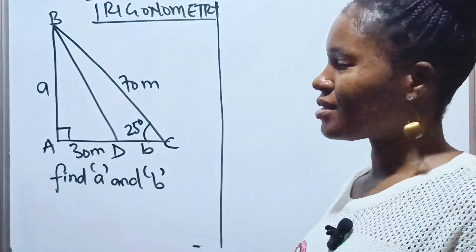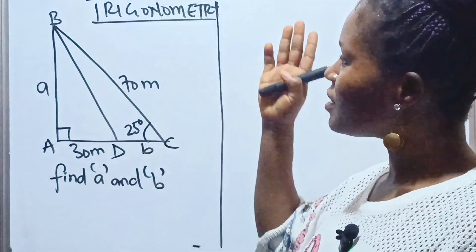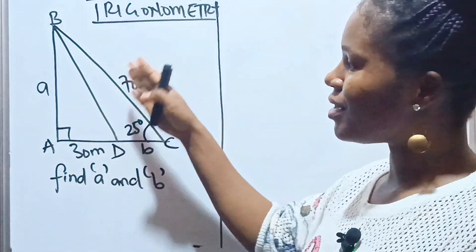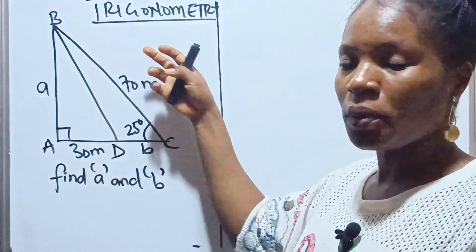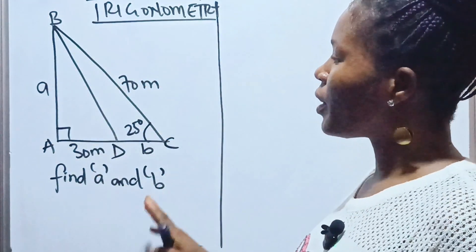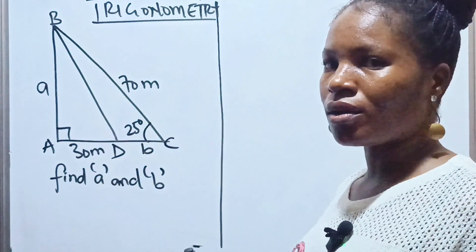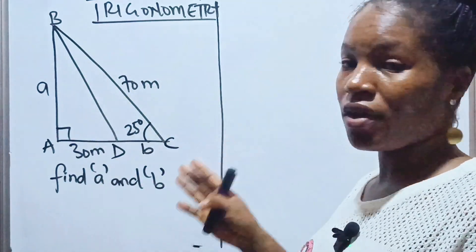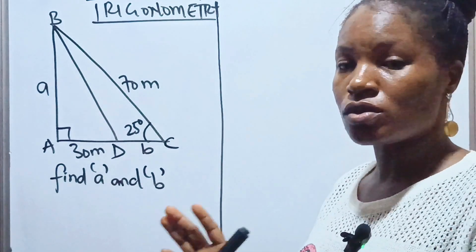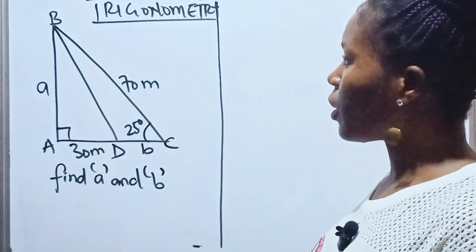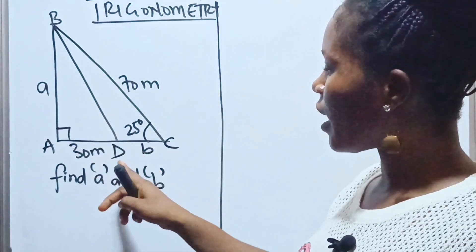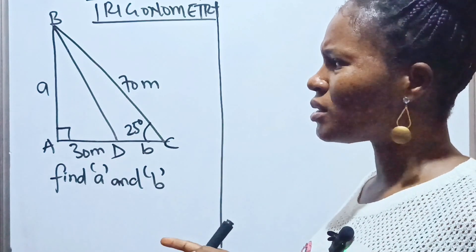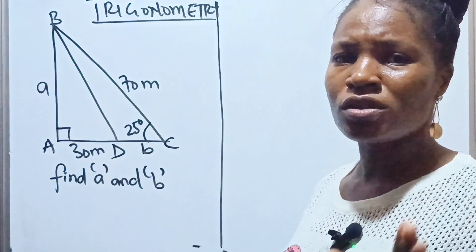Welcome back, viewers. Today we'll be discussing a trigonometry question. When you look at this diagram it looks tricky, but it's a very simple thing to solve. We are asked to find the value of a and b. How do we go about this?